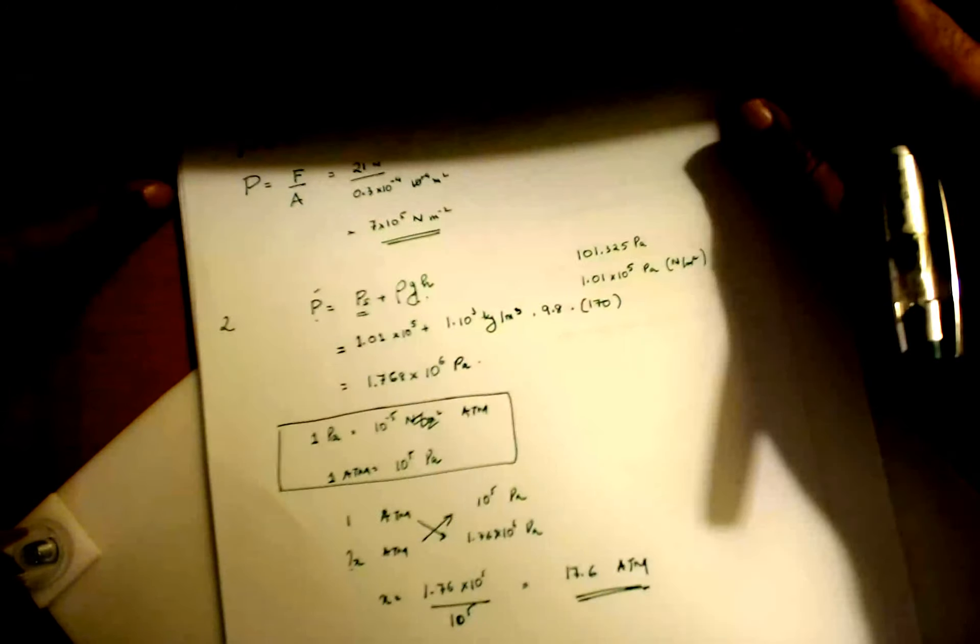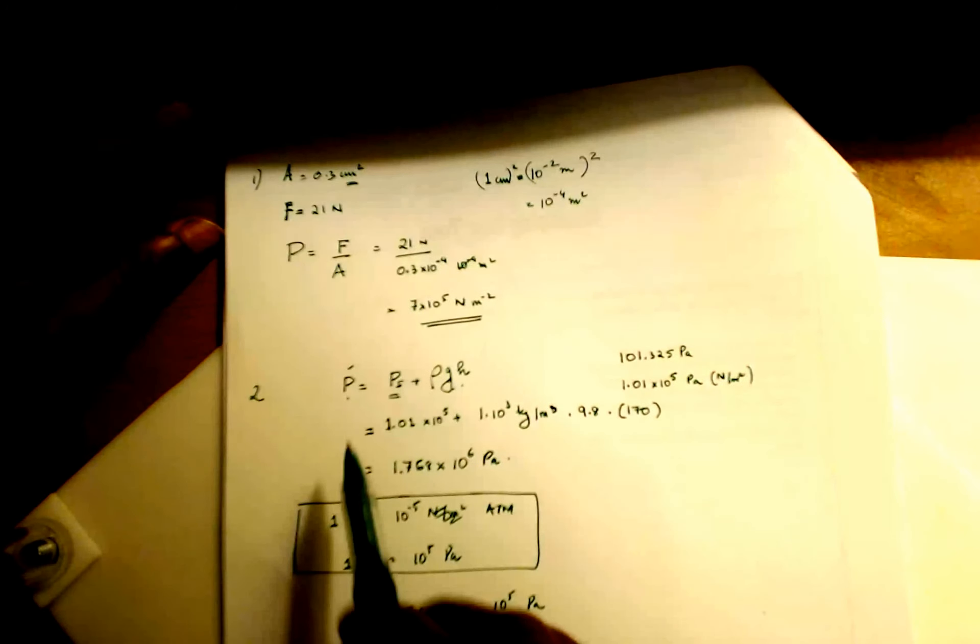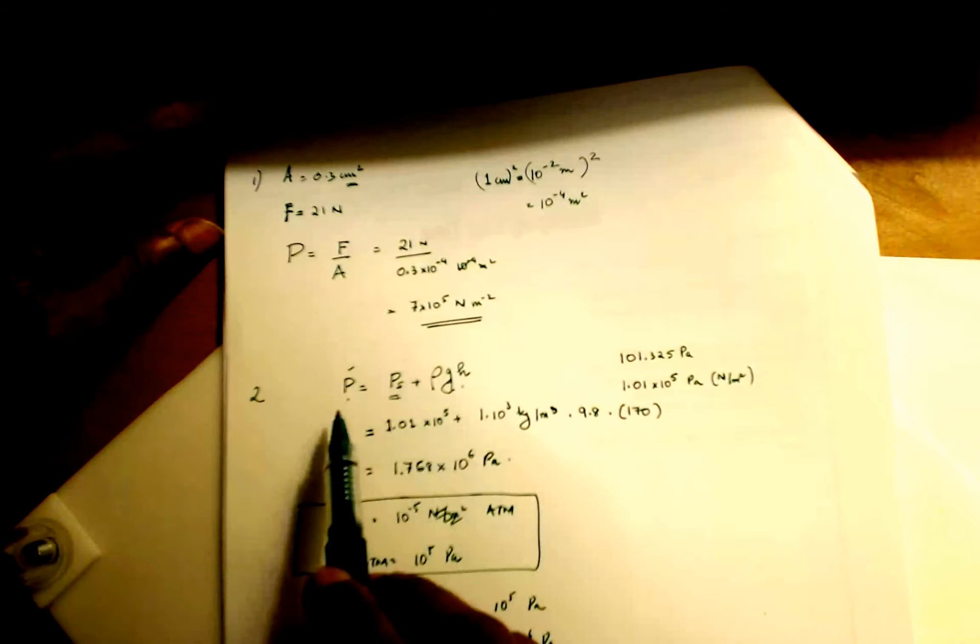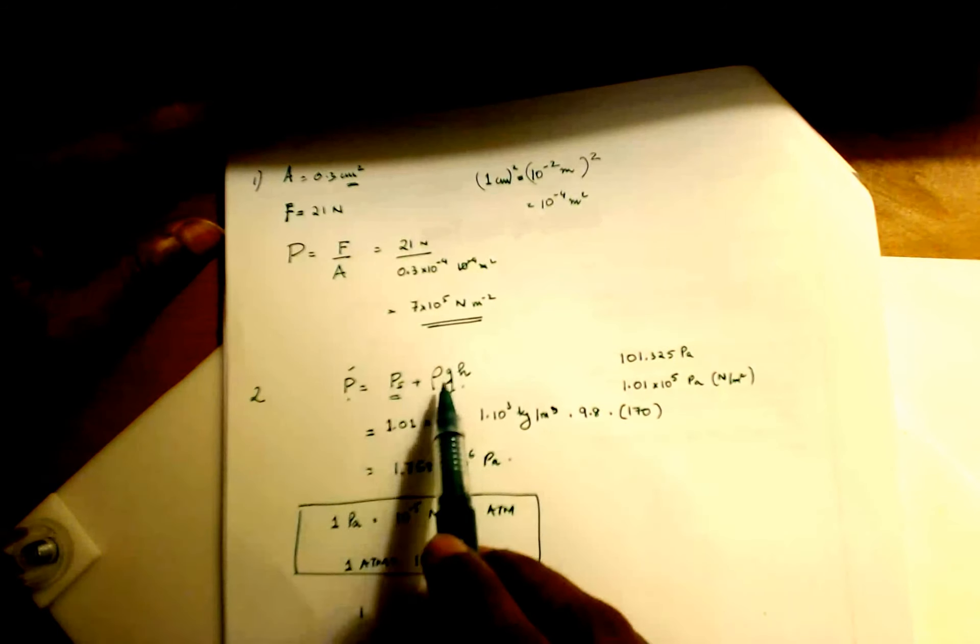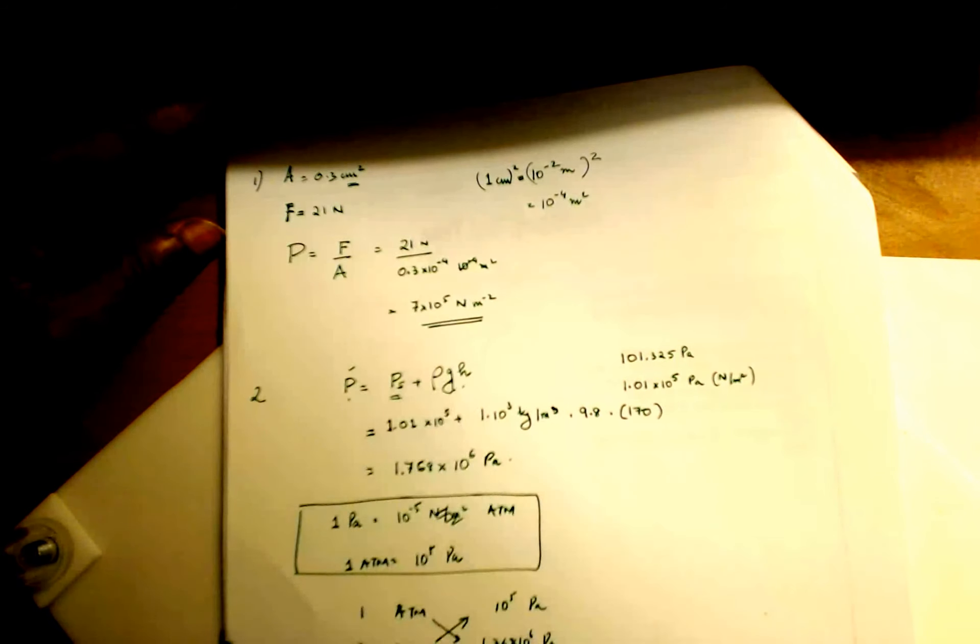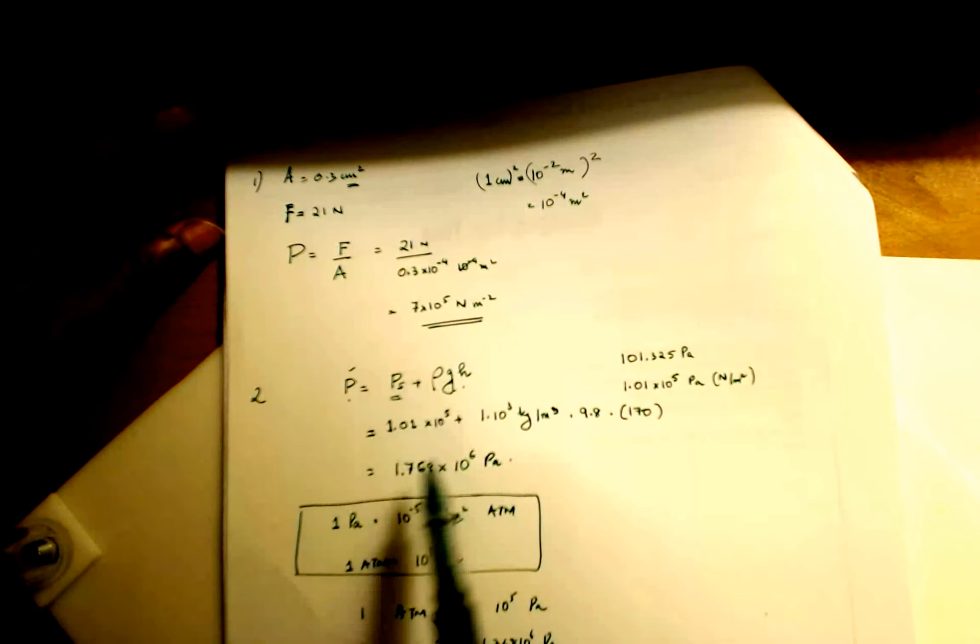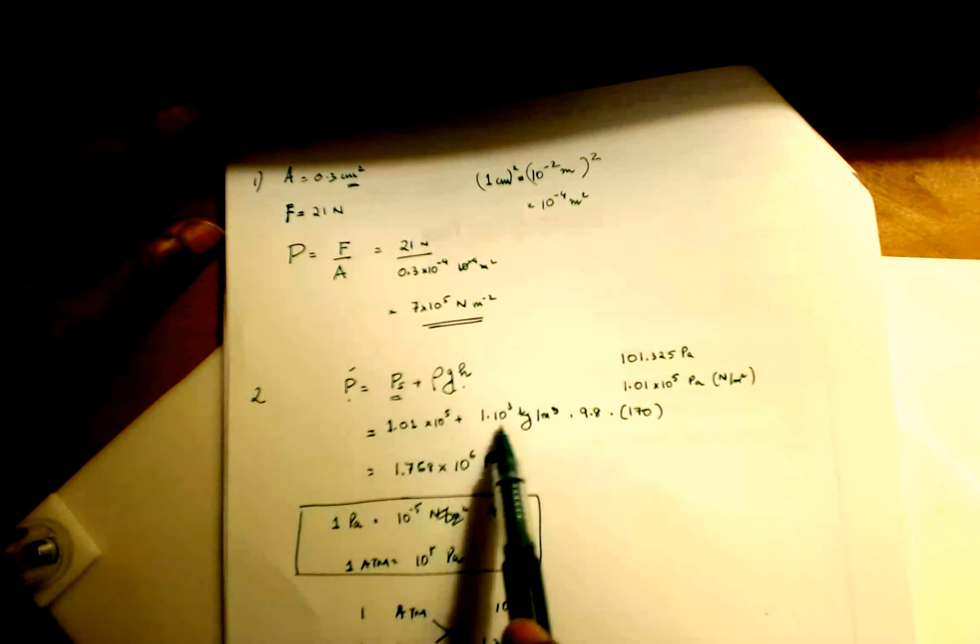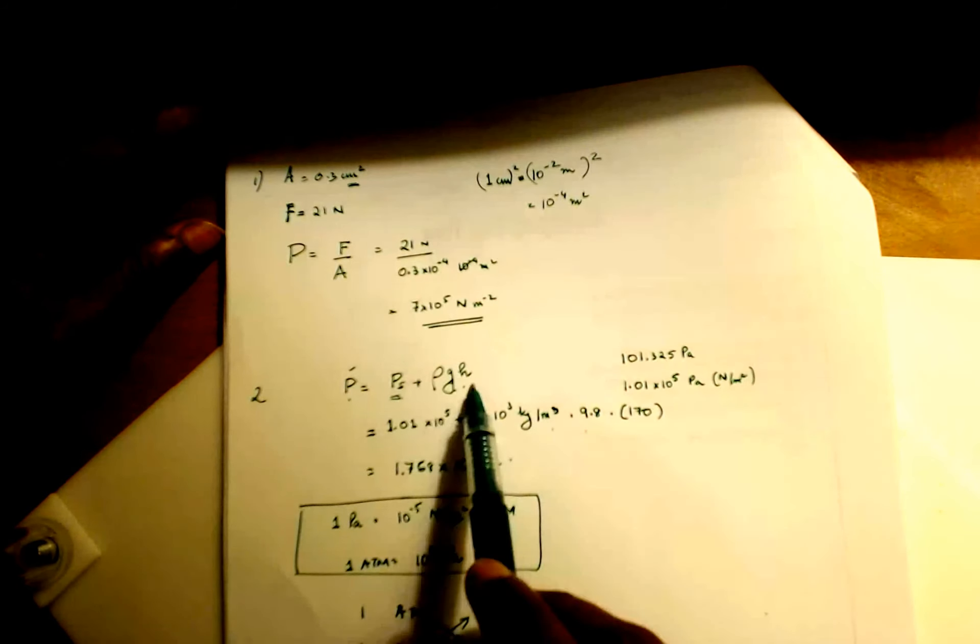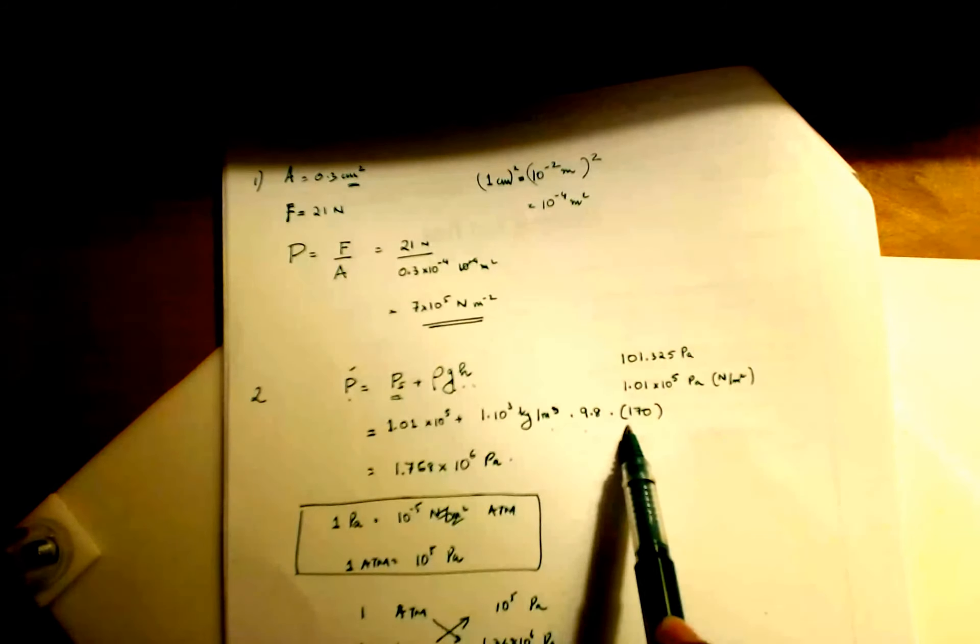Okay, so what are the key ideas? The key idea here in this question is the equation pressure at any height h. And the formula is pressure equals surface pressure plus density times g times h. We know surface pressure is this value right here in pascals. Density of water is a thousand kg per meter cubed. G is 9.8, and height in the question was given as 170 meters.